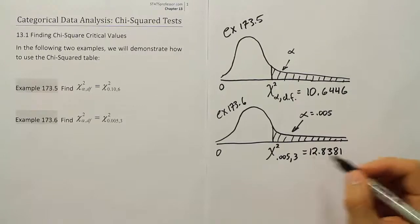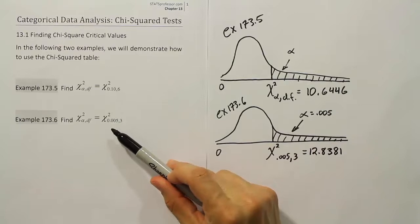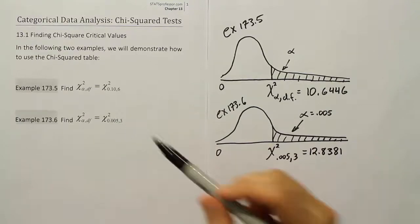So that's your chi-squared critical value in this scenario where you have alpha of 0.005 and 3 degrees of freedom.